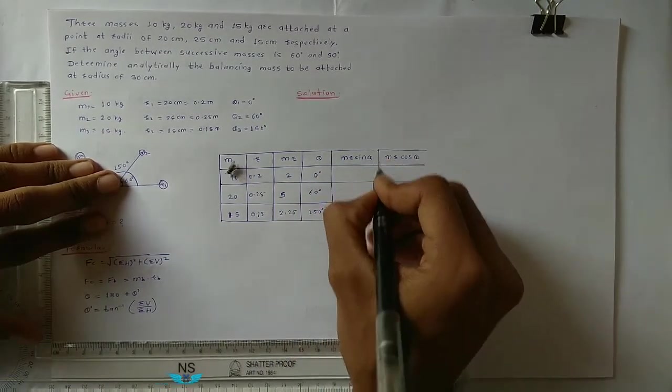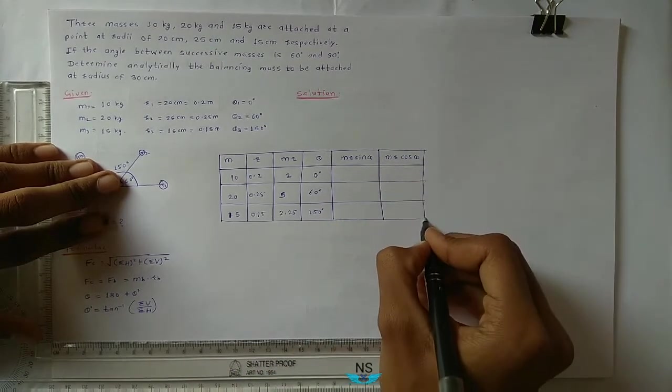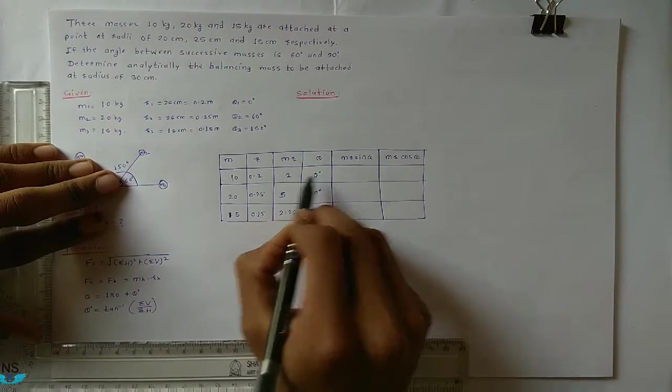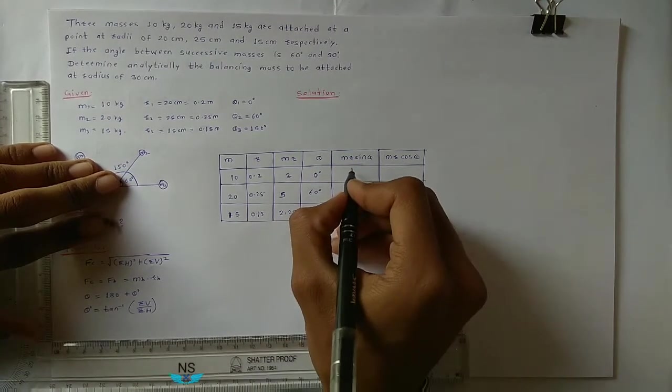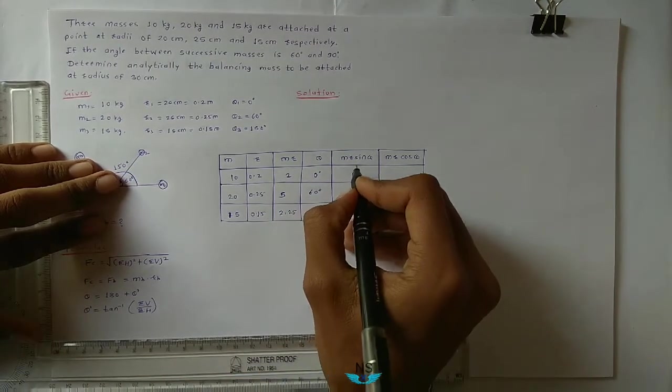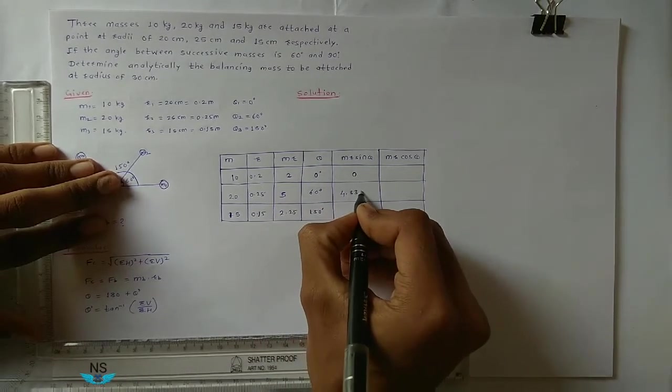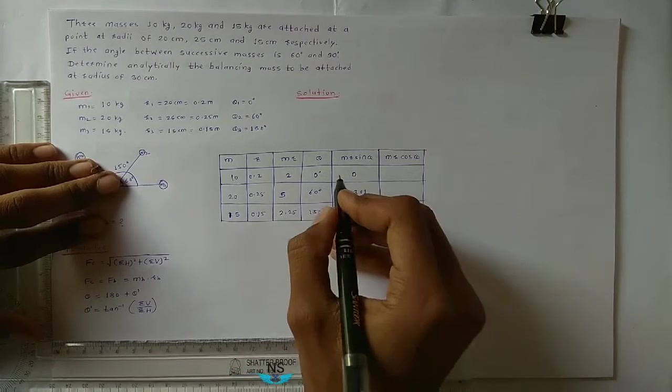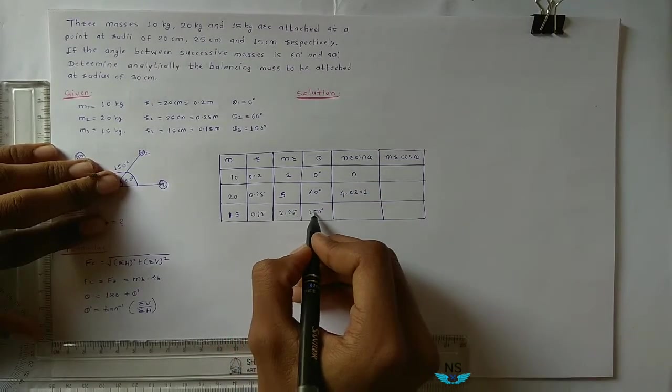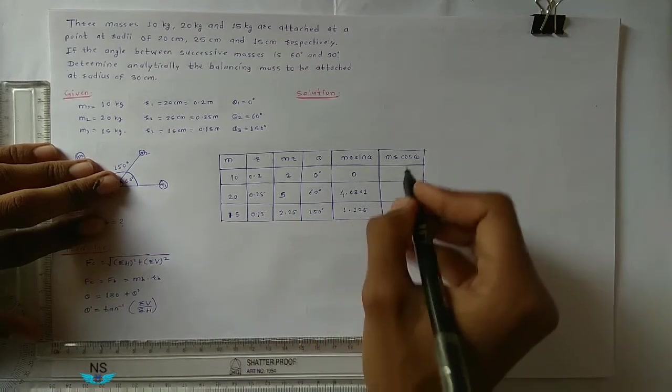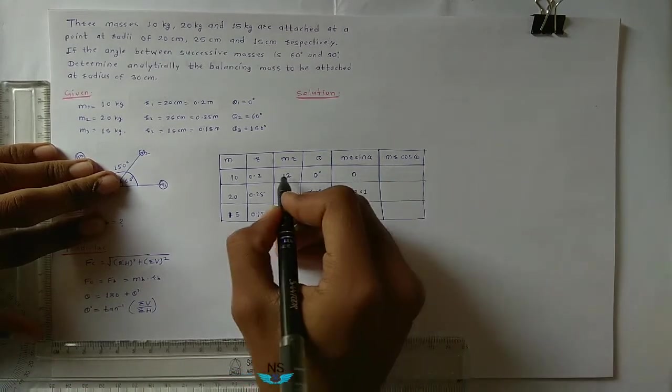Now M R sin theta. M R sin theta is: 2 into sin 0 equals 0, then 5 into sin 60 equals 4.33, and 2.25 sin 150 equals 1.125.